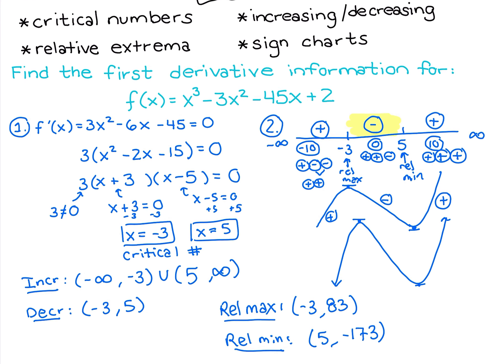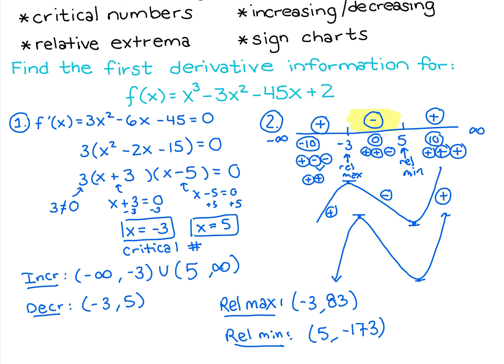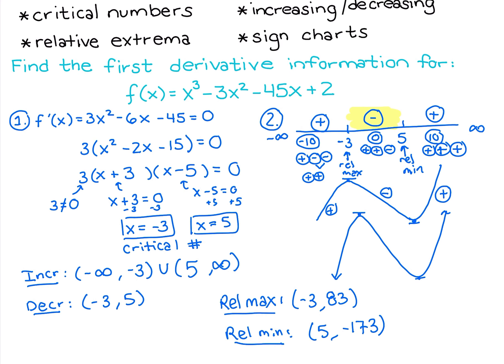So there's all of our first derivative information: critical numbers, increasing intervals, decreasing intervals, relative max, and relative min. Once you find your critical numbers, those are the only places you could switch from increasing to decreasing, and relative extrema can only happen at critical numbers. If you're unsure about your factoring, plug a critical number back into the unfactored form of the derivative to verify you get 0.